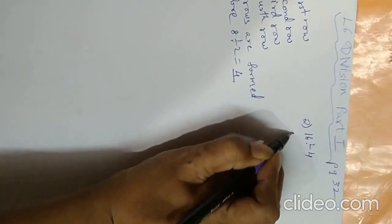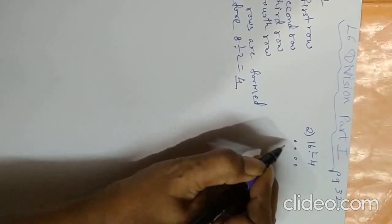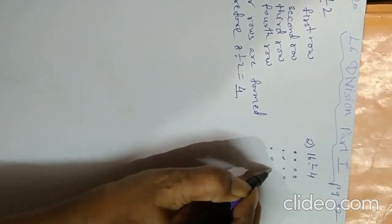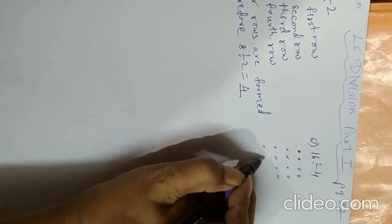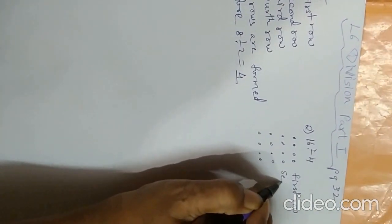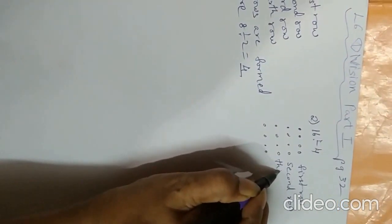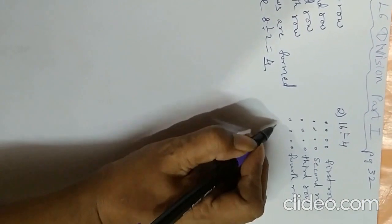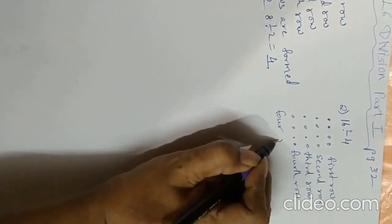The second sum is 16 divided by 4. That means we have to make groups of 4 - that is, dots of 4: 1, 2, 3, 4. Continue making dots up to 16: 5, 6, 7, 8, 9, 10, 11, 12, 13, 14, 15, 16. Now write here: first row, second row, third row, and fourth row.